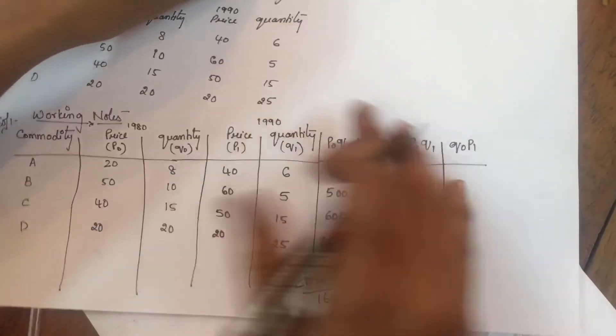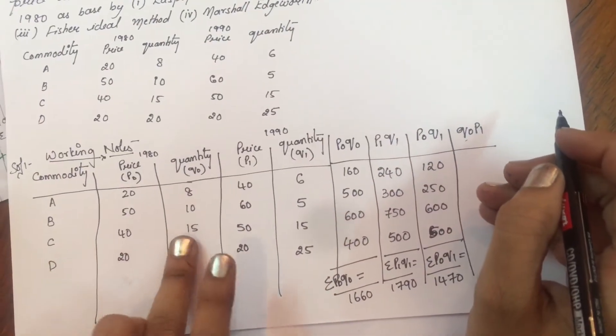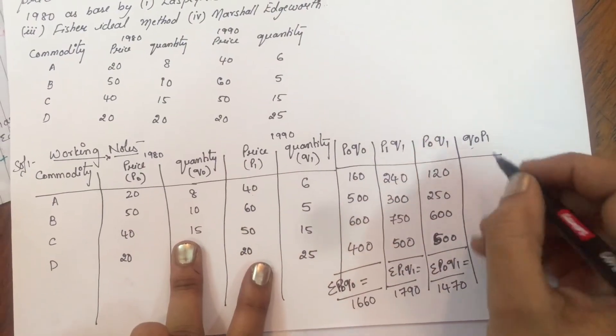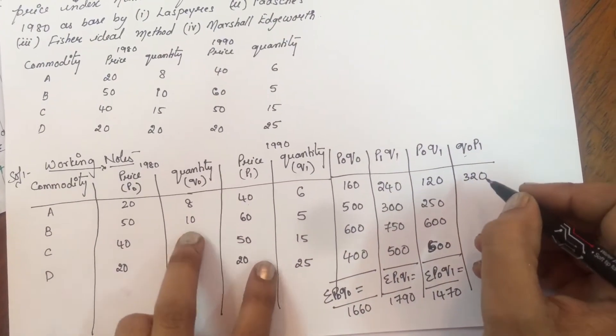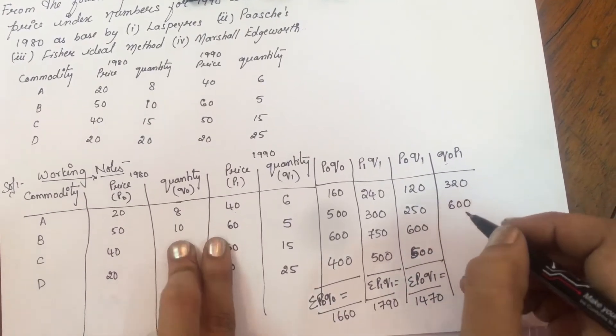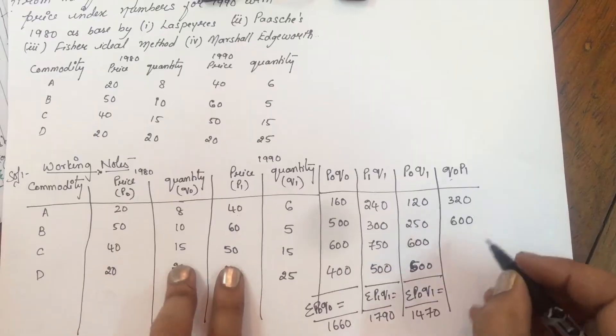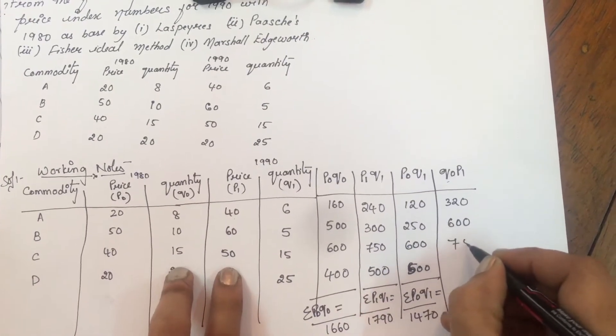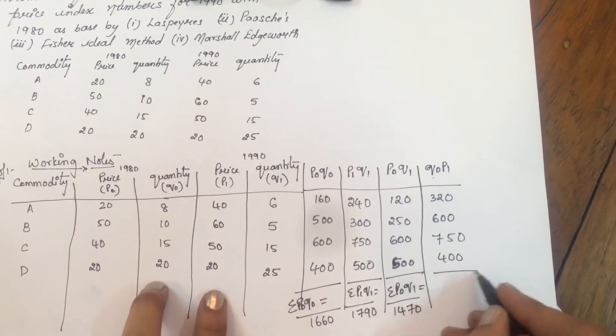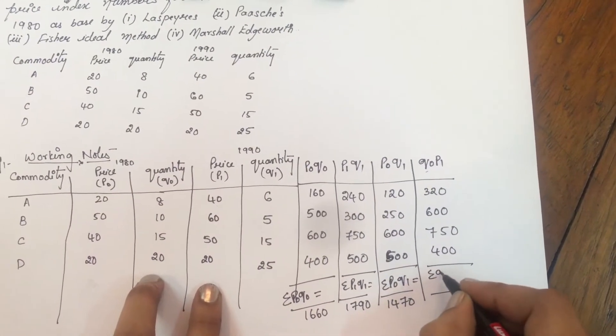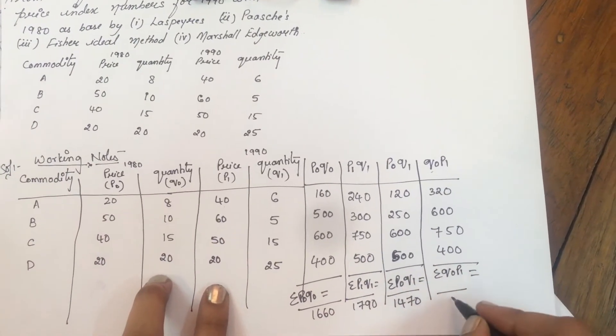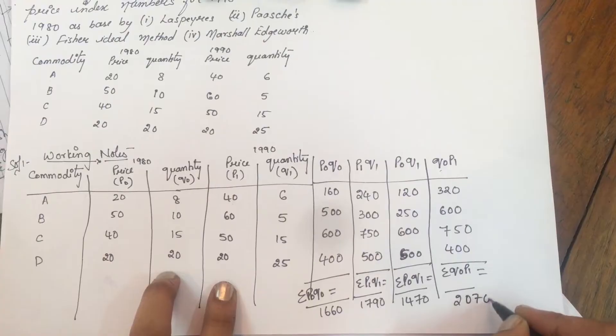Now Q0 P1. 8 into 40 is 320, 10 into 60 is 600, 15 into 50 is 750, 20 into 20 is 400. So Sigma Q0 P1 equal to 2070.